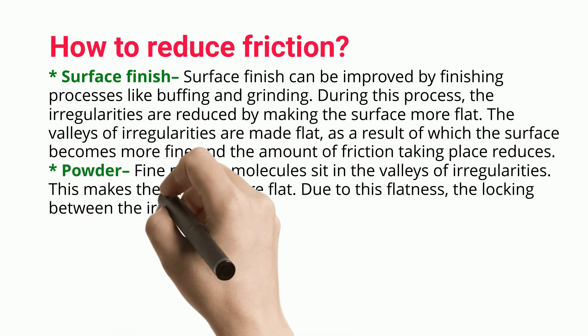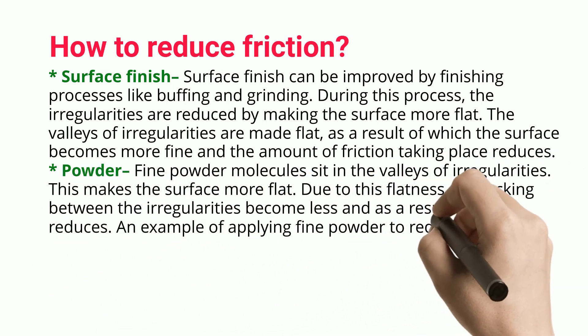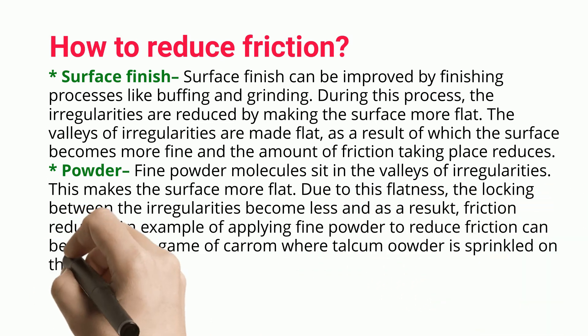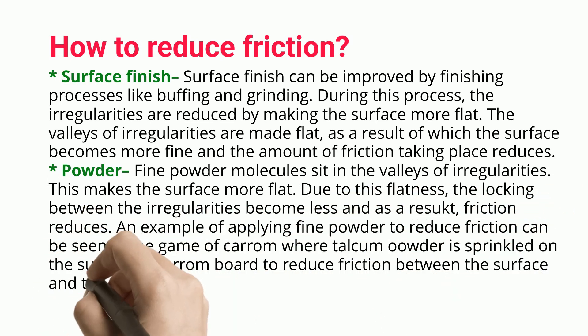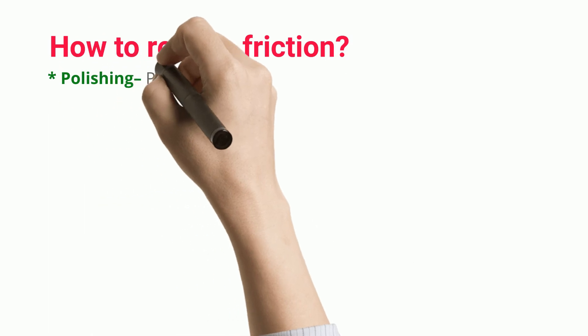Powder: Fine powder molecules sit in the valleys of irregularities, making the surface more flat. Due to this flatness, the locking between the irregularities becomes less and as a result friction reduces. An example of applying fine powder to reduce friction can be seen in the game of carrom, where talcum powder is sprinkled on the surface of the carrom board to reduce friction between the surface and the striker.